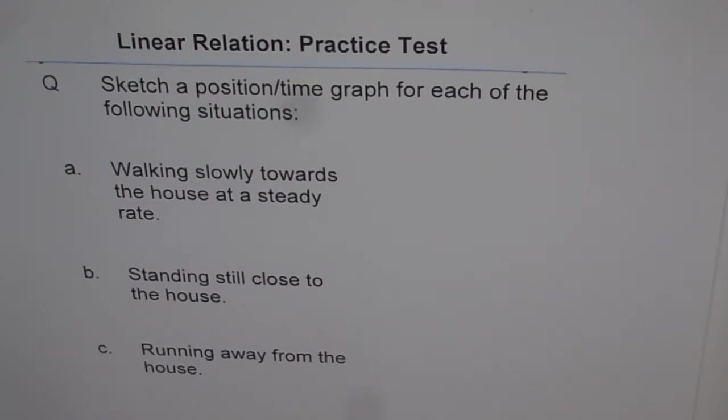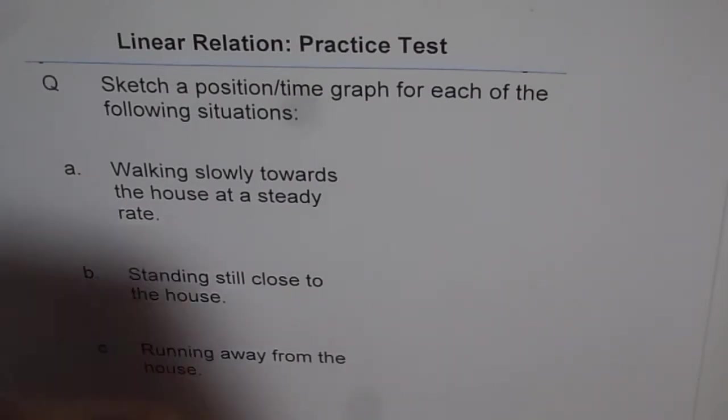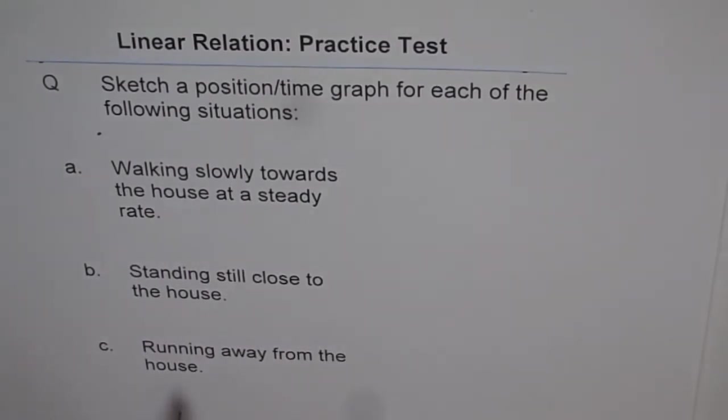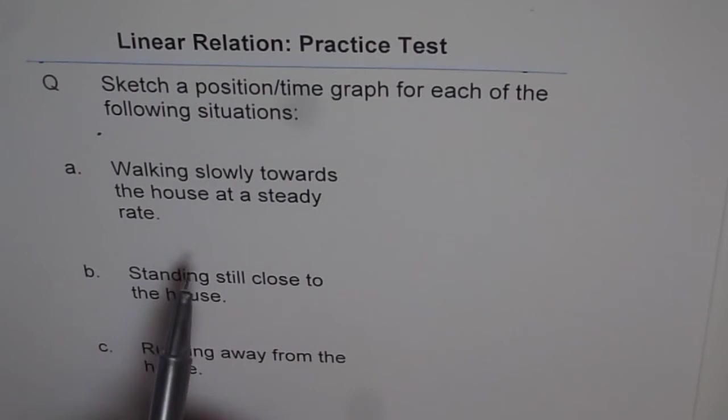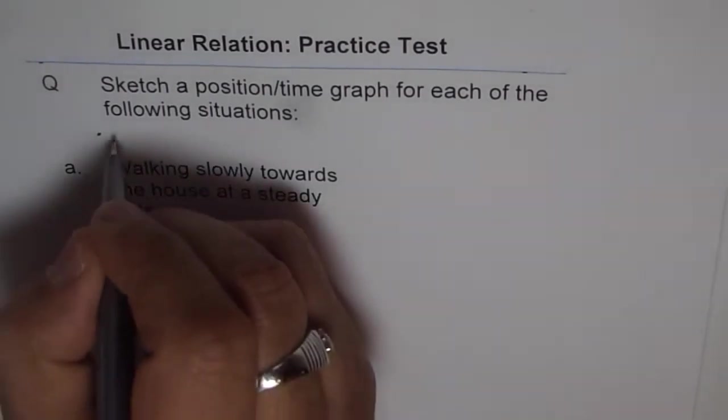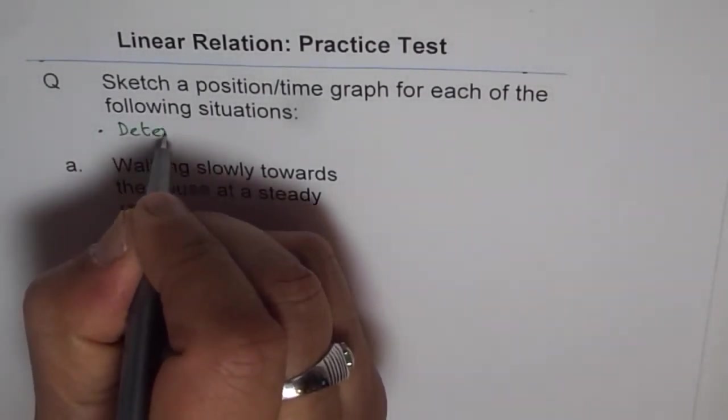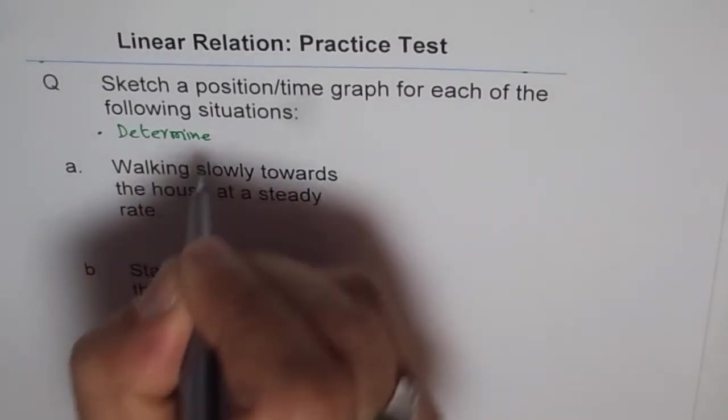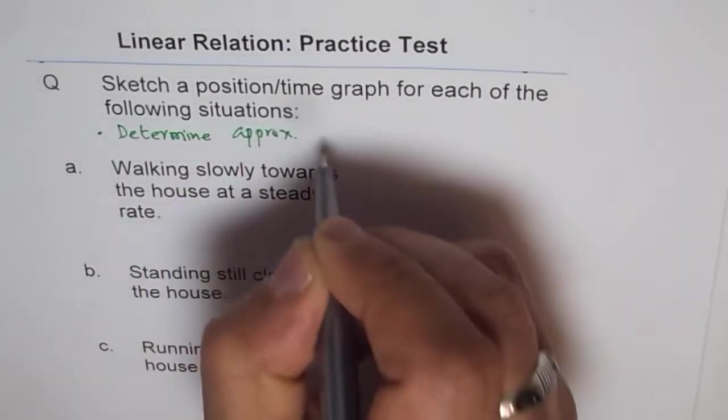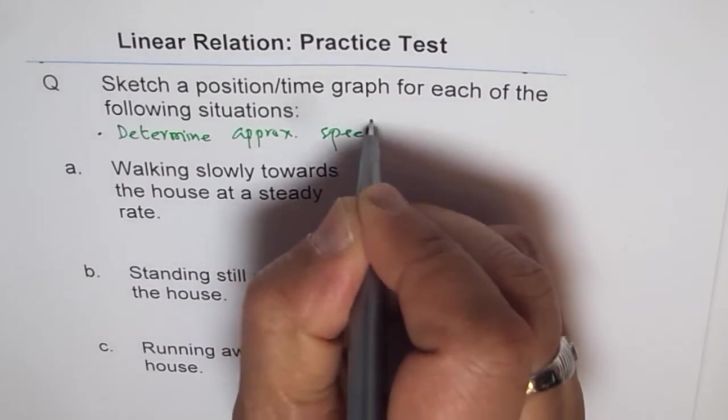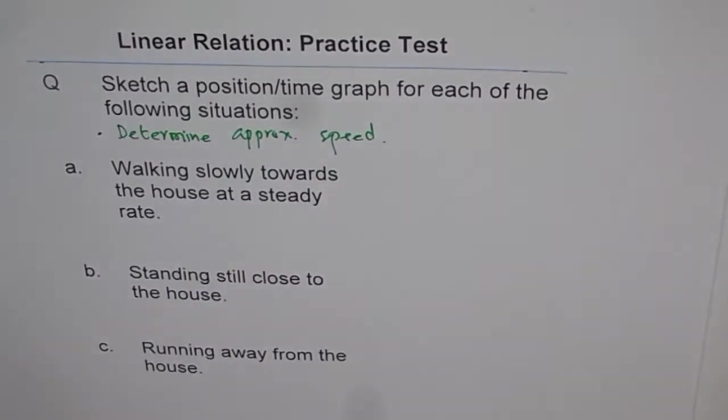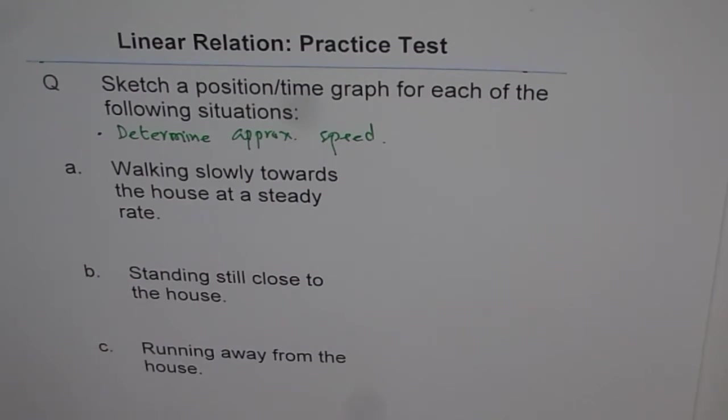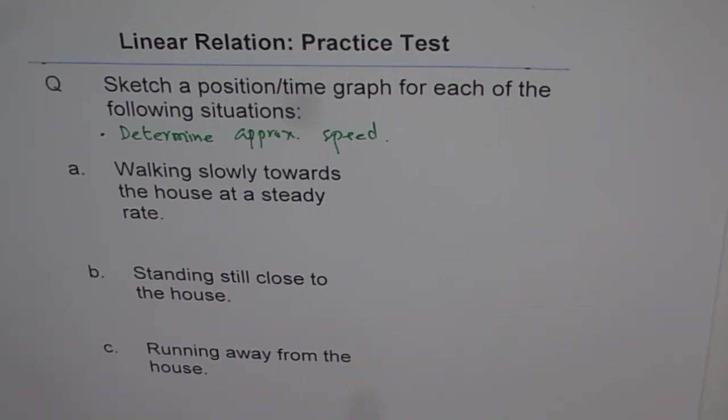Once you sketch it, I would like to add that you should provide details for it. For example, when we say walking slowly towards, find the speed in this case. Determine approximate speed. That is what you need to do in addition to just sketching. That will give you an idea of taking some values, working out, and doing some calculations.